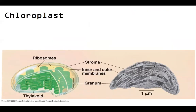That brings us to our chloroplasts. We can see some attributes here. We definitely have that double membrane — this outer membrane and this inner membrane. Our inner membrane is not going to have the infoldings like our mitochondria did.